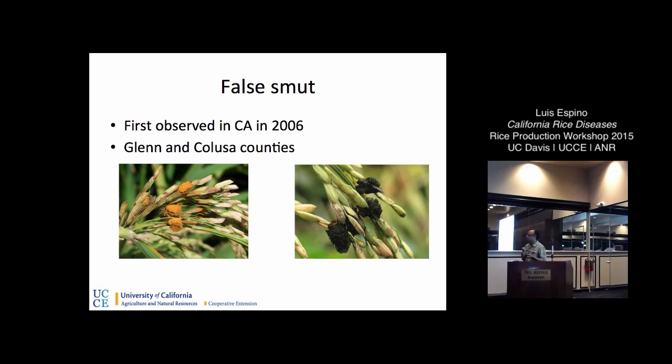The other disease that's out there but not very widespread is false smut. This is another fungus that infects the flowers and produces a mass of spores that are orange inside, then they darken and develop a distinctive appearance on the outside. It's a rare find — I've only seen it once, in Glenn County a number of years ago — but you might run into it and wonder what it is. It's really interesting to see.